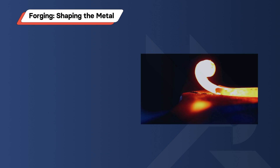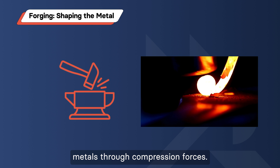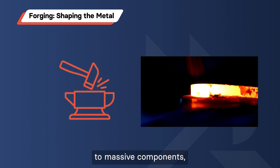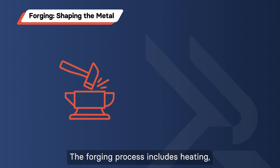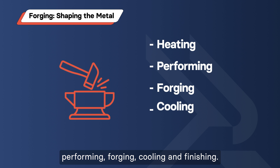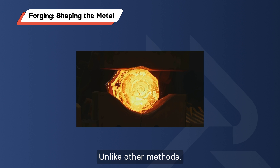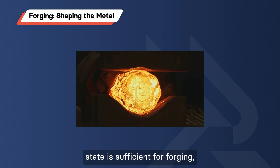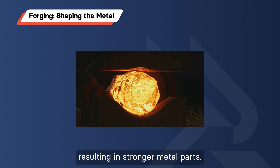Forging – Shaping the Metal. Forging involves heating and shaping metals through compression forces. It can range from small parts to massive components, and it's an efficient process with minimal waste. The forging process includes heating, preforming, forging, cooling, and finishing. Unlike other methods, it doesn't require the metal to be in liquid form — heating it to a malleable state is sufficient, resulting in stronger metal parts.